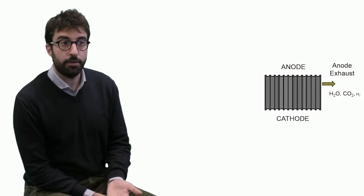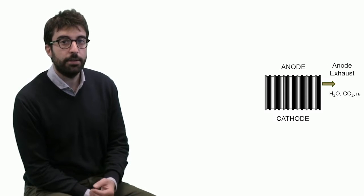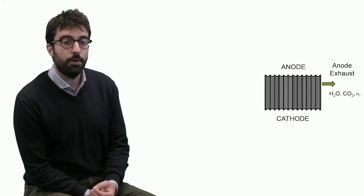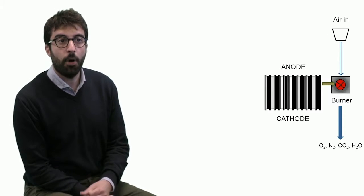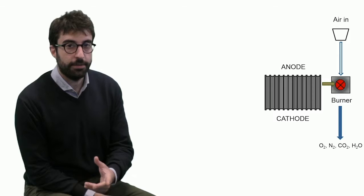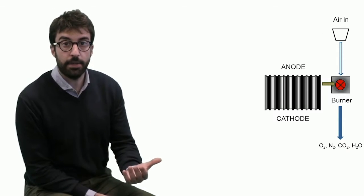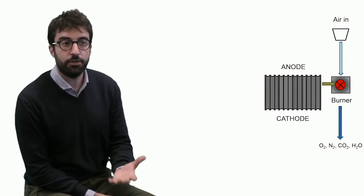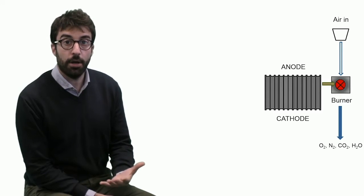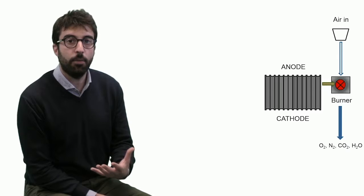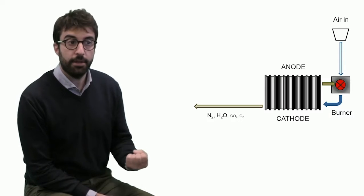In terms of anode off-gases, we usually have a small amount of hydrogen that is combusted in a specific reactor that is a burner. We usually flow air into this reactor because the oxygen will react with hydrogen, and what we will have is a mixture of oxygen, nitrogen, carbon dioxide, and steam, and this is a very good inlet gas for the cathode. So what we usually do in molten carbonate fuel cell systems is to use the off-gases of the burner to feed the cathode.